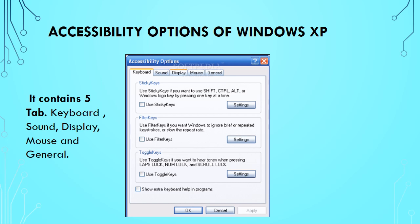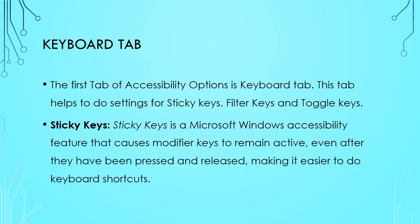Accessibility Options contains five tabs: Keyboard, Sound, Display, Mouse, and General. All the settings are based in these five tabs. Let's start with the first tab, that is the Keyboard tab. This tab helps to do settings for Sticky Keys, Filter Keys, and Toggle Keys.